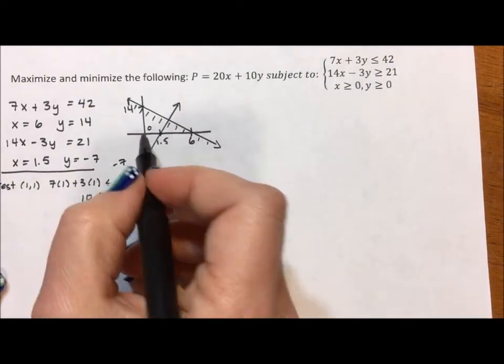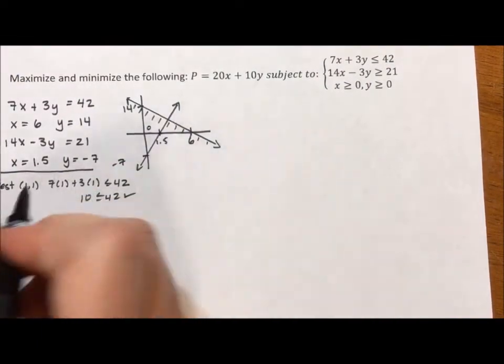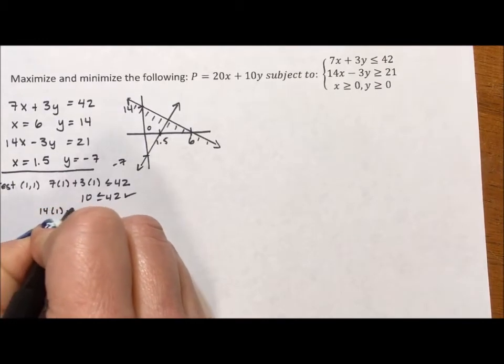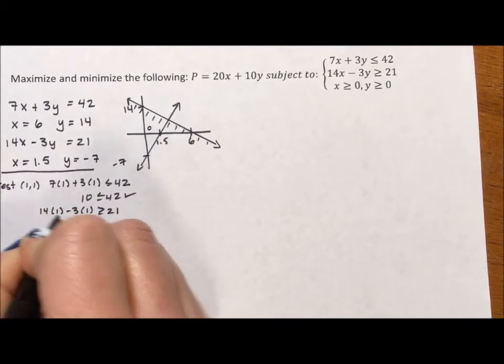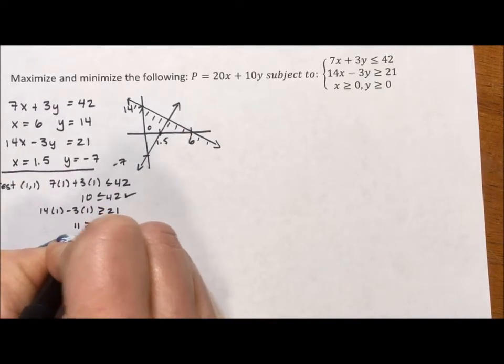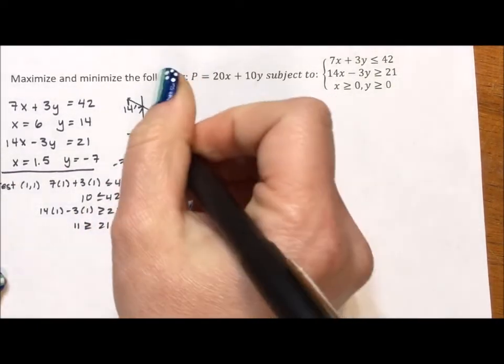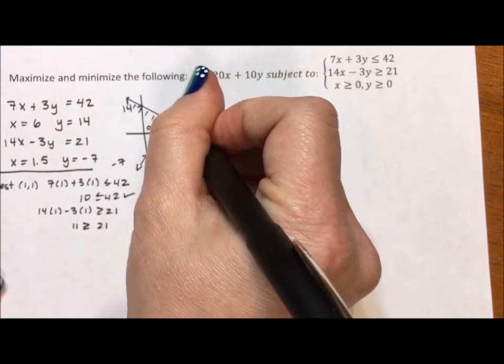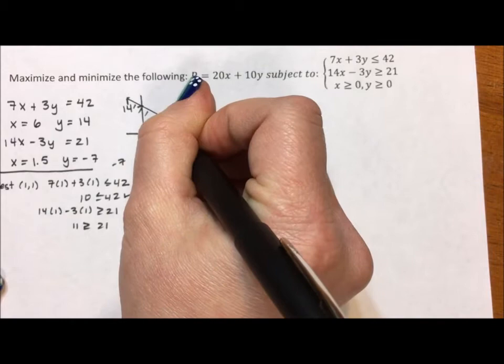I'm going to test the same point for my next line. So is 14 times 1 minus 3 times 1 greater than or equal to 21? That is 11 greater than or equal to 21. It's false for this line. So I don't want to go to that point. I'm going to go away from that point.